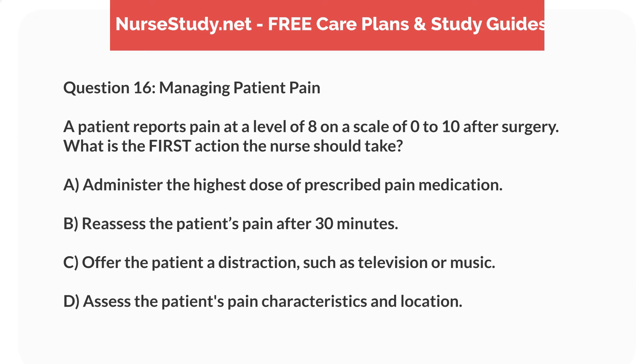Question 16. Managing Patient Pain. A patient reports pain at a level of 8 on a scale of 0 to 10 after surgery. What is the first action the nurse should take? A. Administer the highest dose of prescribed pain medication. B. Reassess the patient's pain after 30 minutes. C. Offer the patient a distraction, such as television or music. D. Assess the patient's pain characteristics and location.